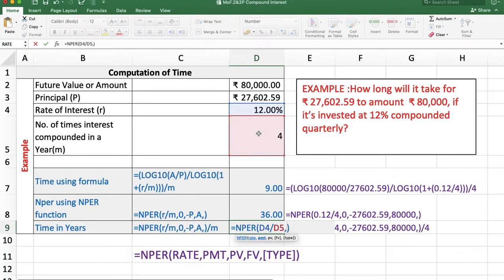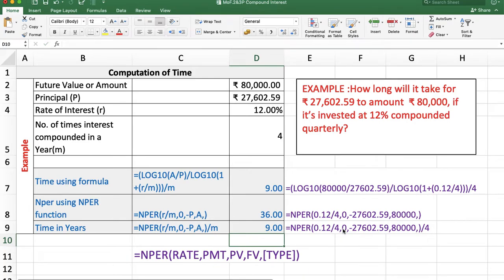Alternatively, we can use =NPER(Rate, 0, -PresentValue, Amount)/M. We divide the whole result by M. Enter. Again, the answer is 9 years.